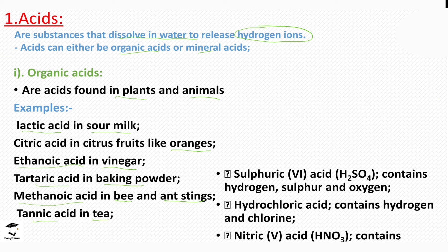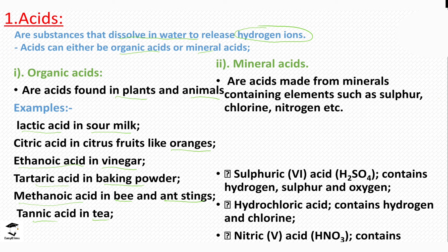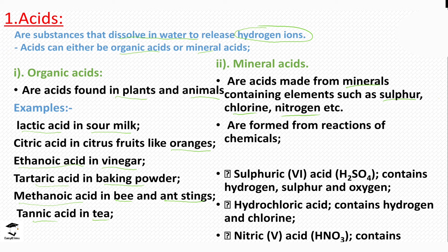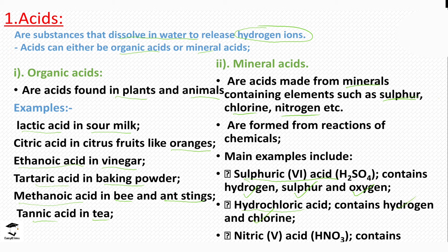Acids can also be grouped into mineral acids. Mineral acids are usually made from minerals containing elements such as sulfur, chlorine, and nitrogen. Examples are sulfuric acid — which contains hydrogen, sulfur, and oxygen — hydrochloric acid — which contains hydrogen and chlorine — and nitric acid — which contains hydrogen, nitrogen, and oxygen.